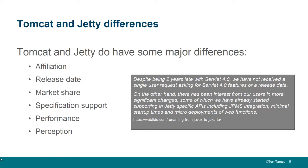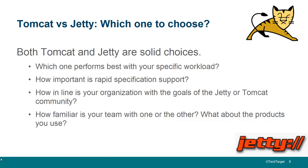That's a pretty interesting attitude difference between the two servers. Tomcat's approach is: there's a spec, we need to implement it. Jetty's approach is: there's a spec, we'll implement it when our users start demanding it — but our users have other demands first, so we'll go after those before chasing the spec.